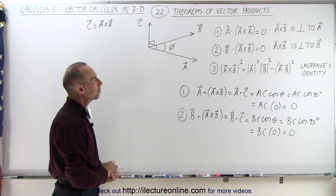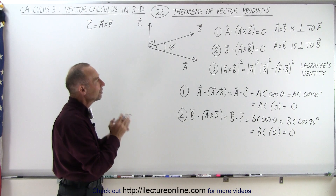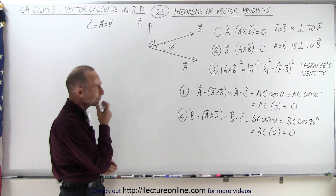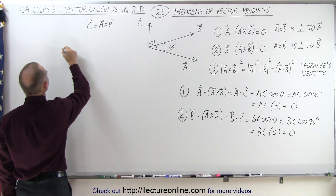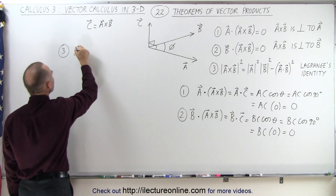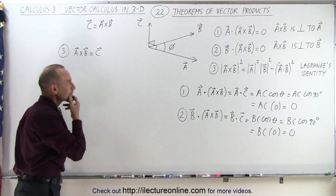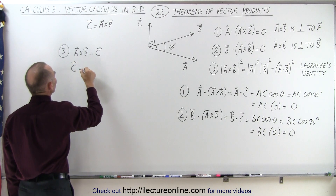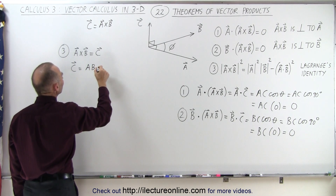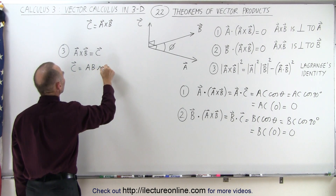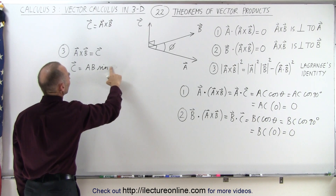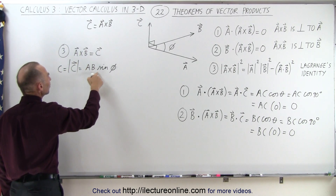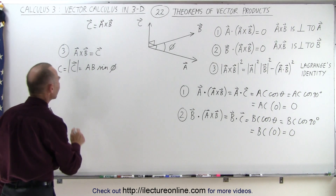What about the third statement? The magnitude of a × b squared equals the magnitude of a squared times the magnitude of b squared minus the dot product of a and b, quantity squared. Let's verify this. We know that a × b equals c, and c equals |a| times |b| times sine of the angle between them, using angle phi. So |c| = |a||b|sin(φ), which means c² = a²b²sin²(φ).